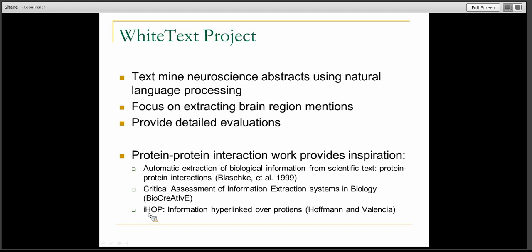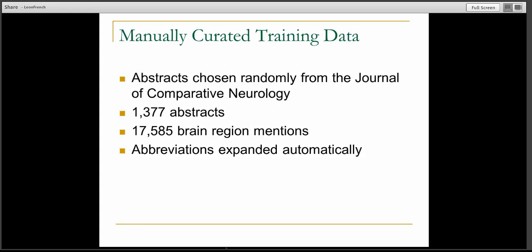So to do this, the first step is to create a good manually curated training set. We went through the Journal of Comparative Neurology and randomly chose abstracts. The curator manually annotated whenever the author mentioned a brain region — think of printing out a bunch of abstracts and going over them with a yellow highlighter marking brain regions. It was all done in a computer interface using the GATE software framework. We have a large number of abstracts covering almost 18,000 brain region mentions. One preprocessing step is to automatically expand abbreviations to their full forms to prevent having to deal with short, ambiguous three-letter abbreviations.